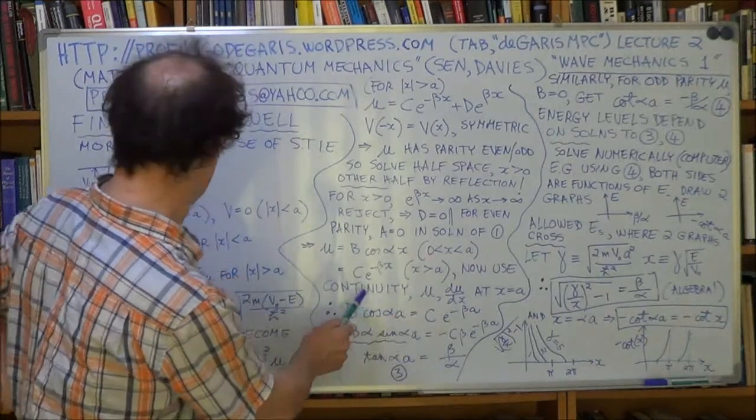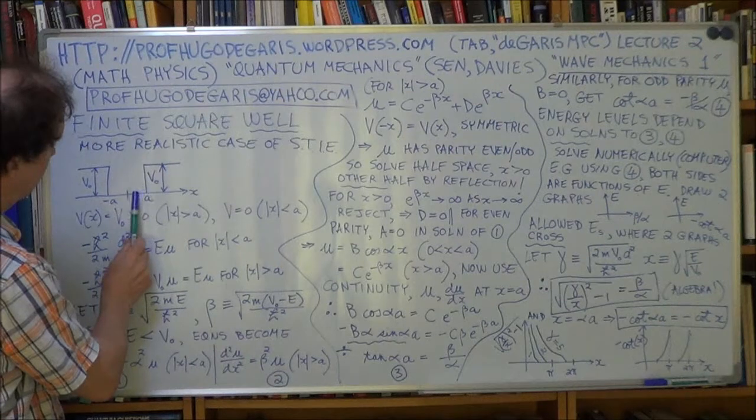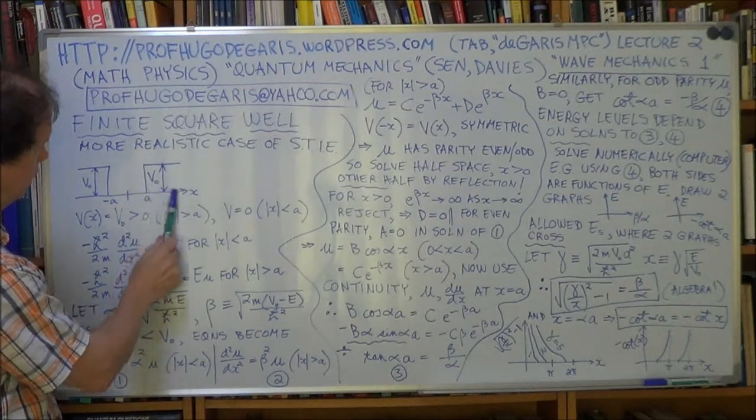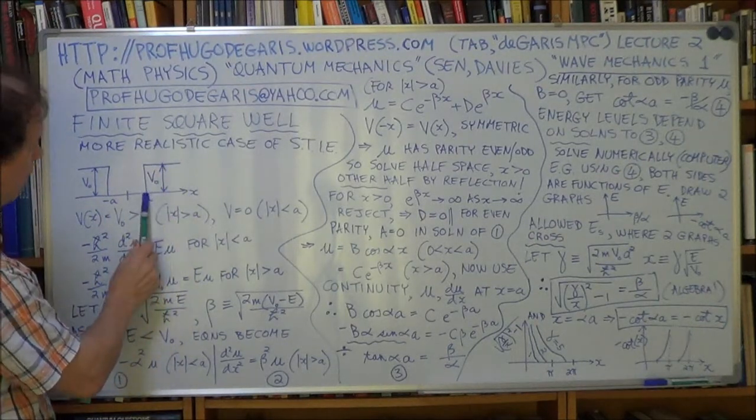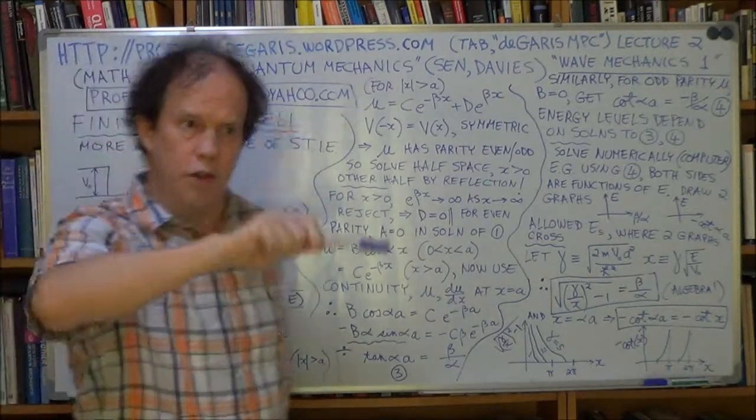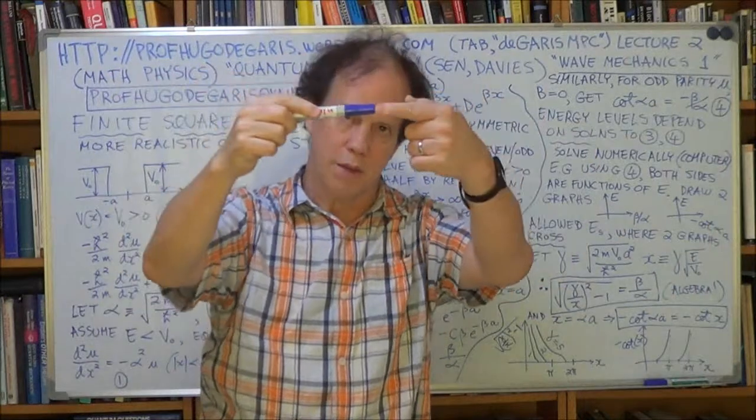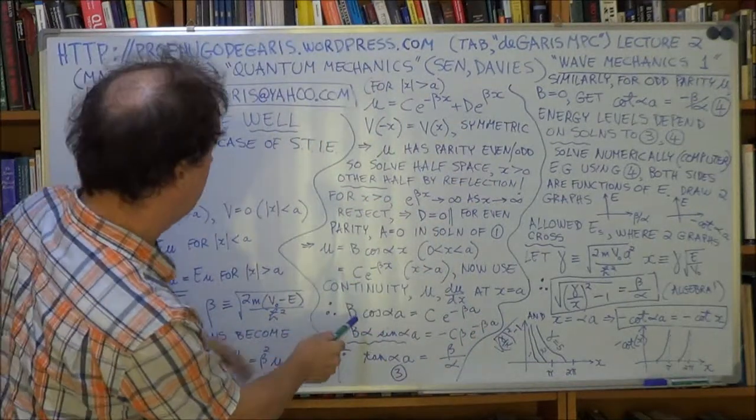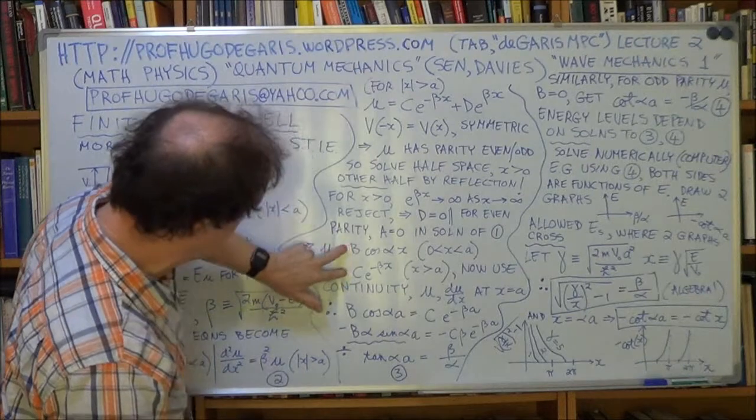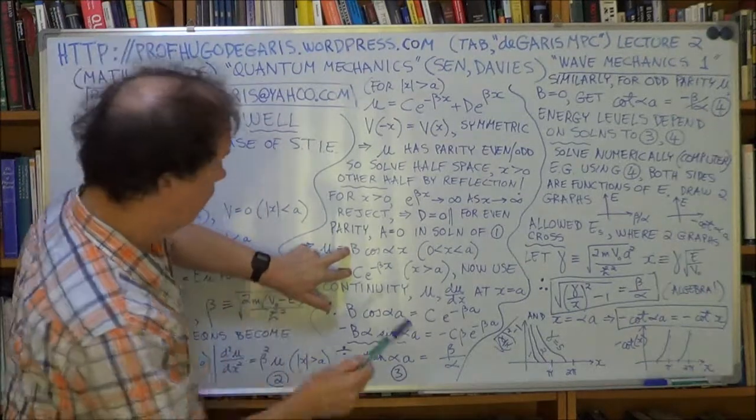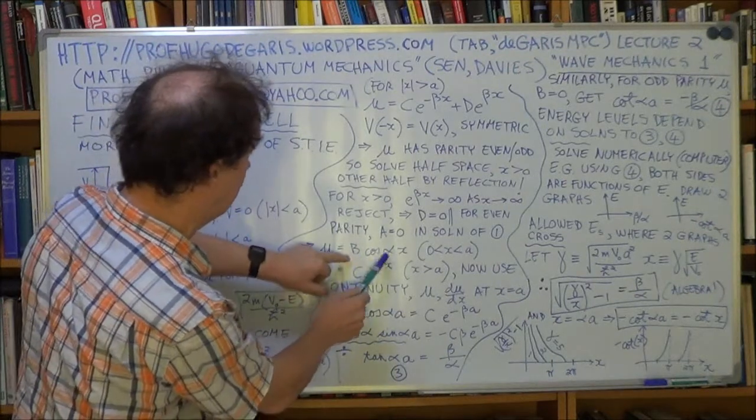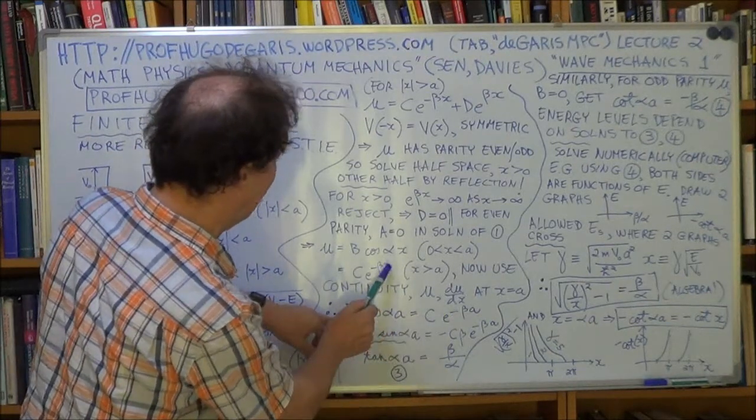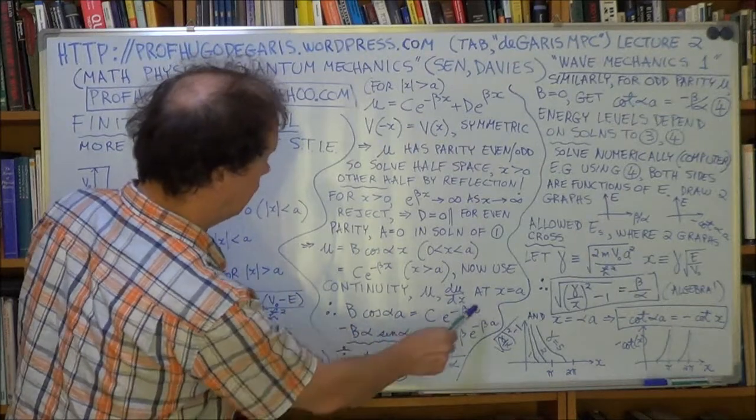Well, let's do continuity. So the value of the wave function here at x equals a must equal the value of the second solution in this region. Those two have to be equal at x equals a. So you don't get sudden jumps. The values meet. They're the same value at that boundary at x equals a. Therefore, let's see, these two solutions here they have to equal each other when x equals a. So therefore you get b cos alpha a, there it is, equals this: c e to minus beta a.